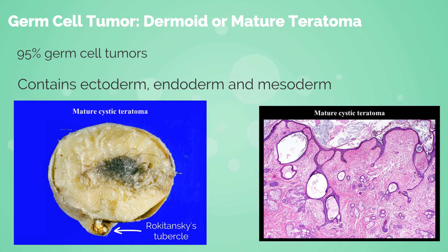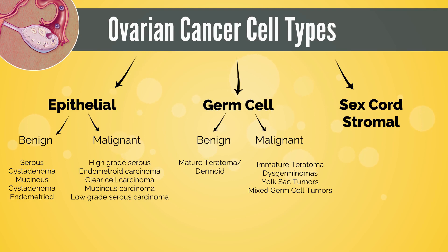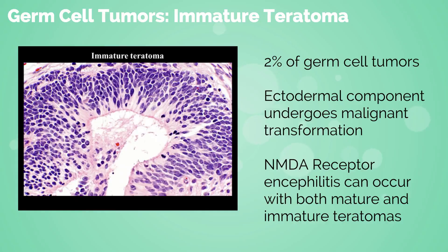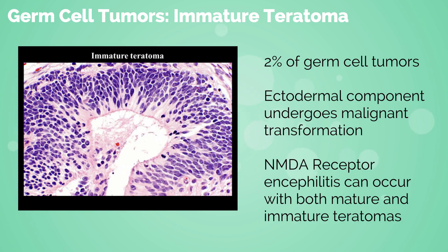The most common malignant germ cell tumors are immature teratomas. Other malignant tumors include dysgerminomas, yolk sac tumors, and mixed germ cell tumors. Malignant or immature teratomas comprise about 2% of germ cell tumors. The ectodermic component usually undergoes malignant transformation to include neural tissue. Paraneoplastic syndromes such as N-methyl-D-aspartate (NMDA) receptor encephalitis can be seen with both mature and immature teratomas, in which the immune system attacks this protein in the brain.